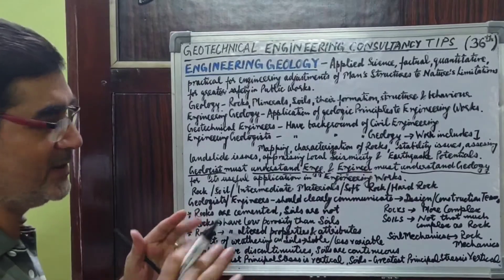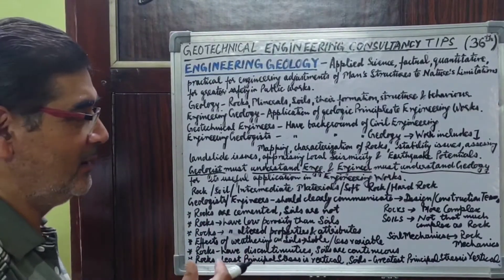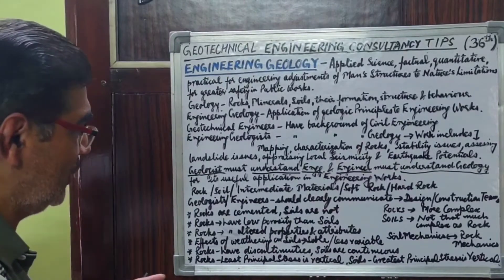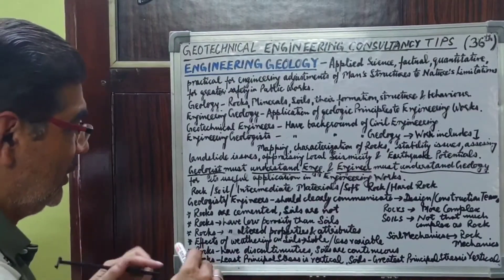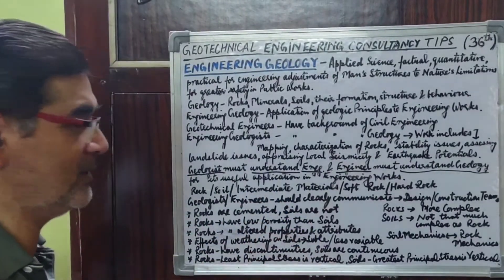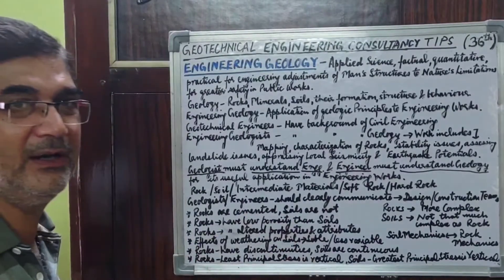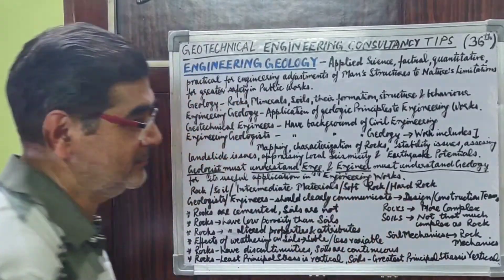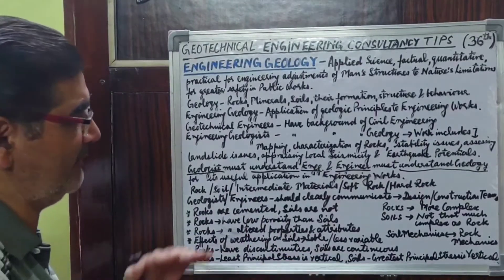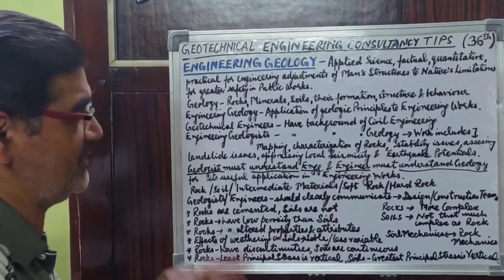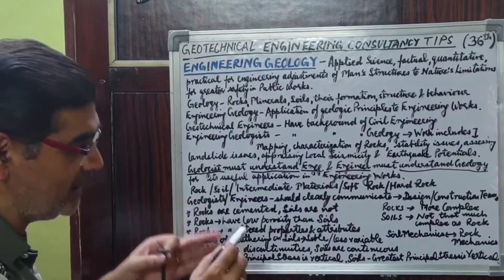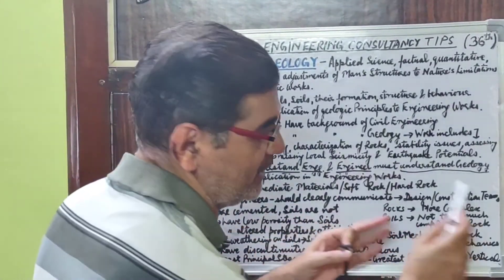We know that soil is clay, sand, and mixtures of these two things. But rock is vast — rock may consist of intermediate materials, weathered rocks that may be slightly or highly weathered, soft rock, or hard rock. When we do our investigations in soil, our specifications differ from when we do our investigations in rock. Engineers should clearly communicate findings to the design and construction teams.